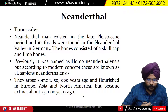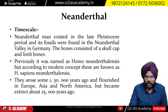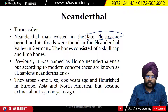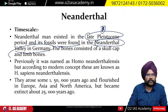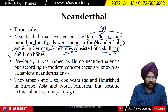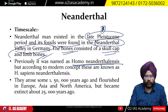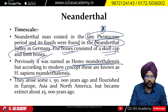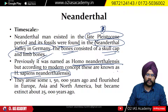The Neanderthal man existed in the Late Pleistocene period. They were found in the Neanderthal Valley in Germany, where a skull cap and limb bones were recovered. Previously named Homo neanderthalensis, according to the modern concept they are now classified as Homo sapiens neanderthalensis, due to the hybridization theory we discussed earlier.